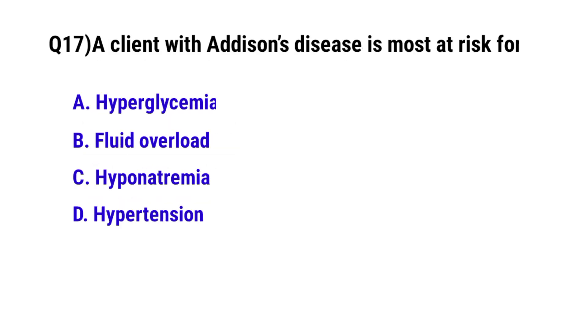Question number 17: A client with Addison's disease is most at risk for? The correct option is C: Hyponatremia.